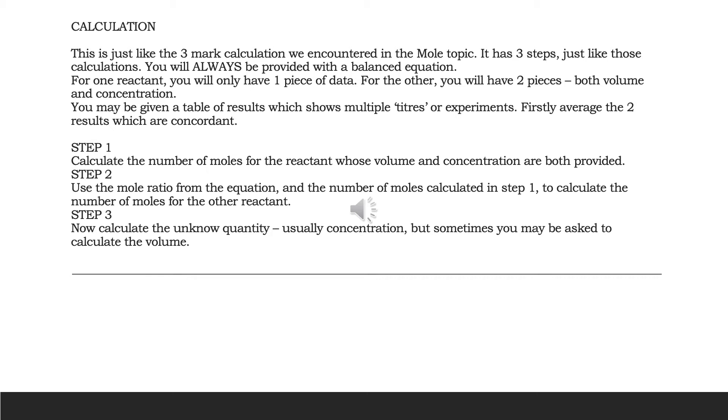Find the chemical that's got both concentration and volume. Step one calculate the number of moles using N equals C times V. Now remember, volume must be in litres. How do we do that? We divide it by a thousand.